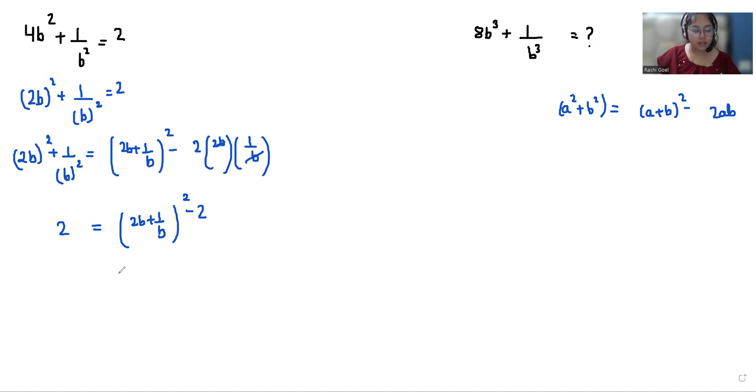Minus 2 goes to the other side. The formula is plus 2ab, so plus 2 goes to the other side. 2 minus 2 gives us 2b plus 1 over b whole square equals 0. Therefore the value of 2b plus 1 over b is 0 also.